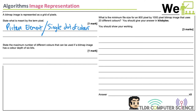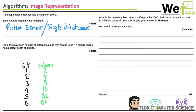State the maximum number of different colors that can be used if a bitmap image has a color depth of six bits. Quick recap: 1 bit gives 2 colors, 2 bits gives 4, 3 bits gives 8, 4 bits gives 16, 5 bits gives 32, and 6 bits gives 64 colors.